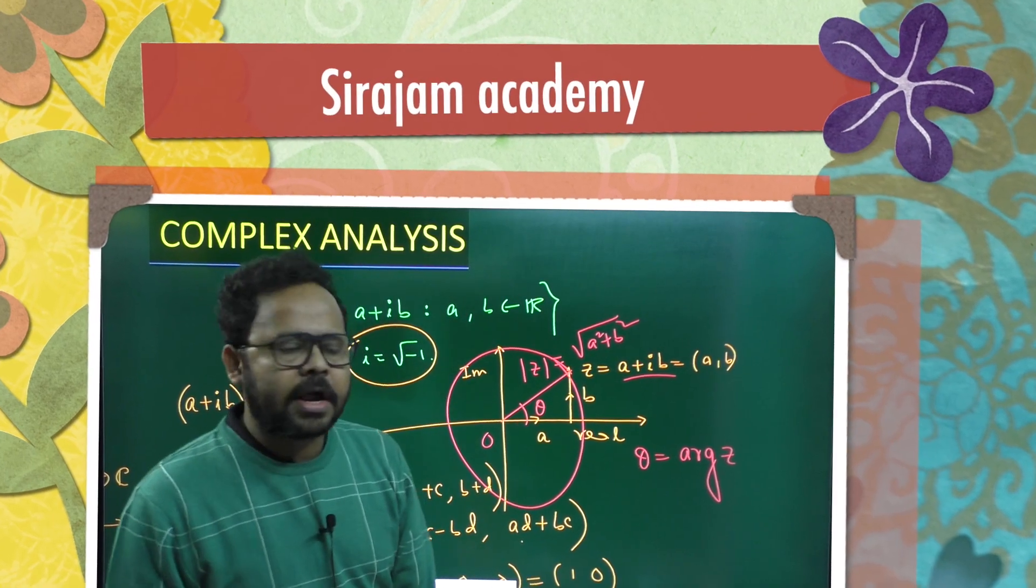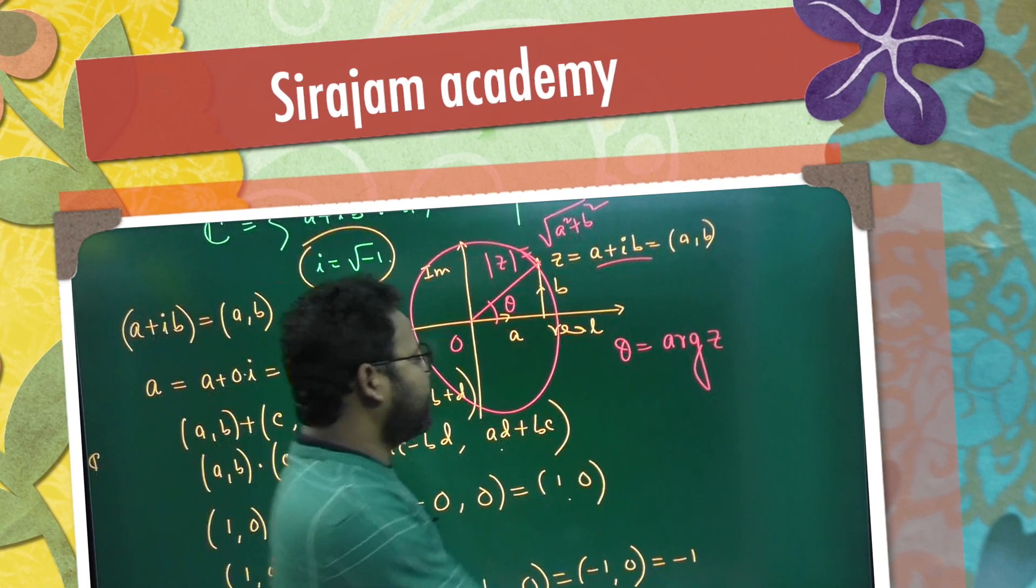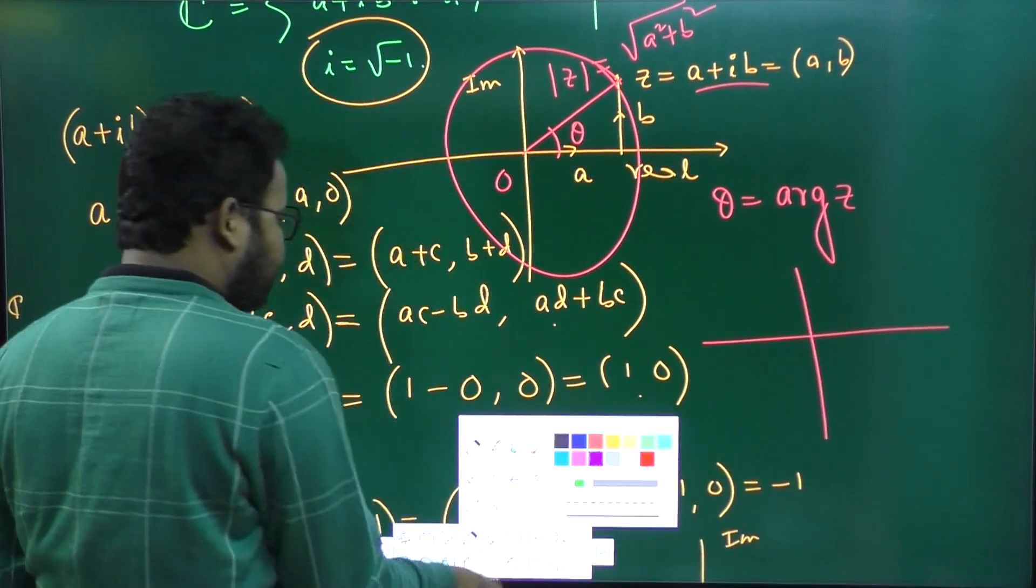This argument is called Principal Argument, so Principal Argument means shortest angle. The maximum Principal Argument is not allowed to exceed a certain level.